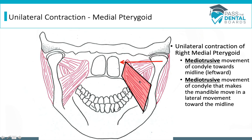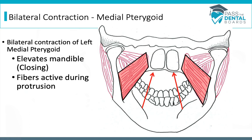With unilateral contraction of the right medial pterygoid, it causes the condyle and jaw to shift towards the left — the contralateral side. With bilateral contraction, the mandible closes and elevates, and these fibers are also a little bit active during protrusion. When questions ask which muscles are active during protrusion, know that the medial pterygoid is active, as is the lateral pterygoid, but the lateral is much more active than the medial.